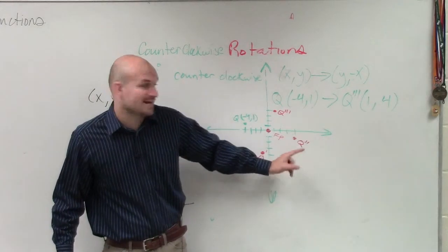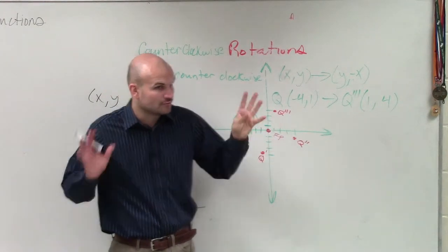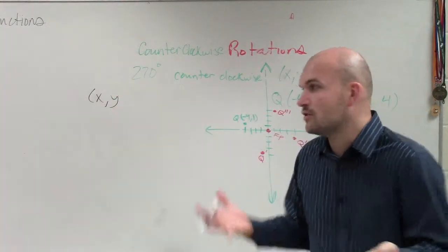q double prime is a reflection 180 degrees, and q triple prime is a reflection of 270. I really need you guys to be paying attention, really, to understand this, because this is the whole point of what we've been talking about.